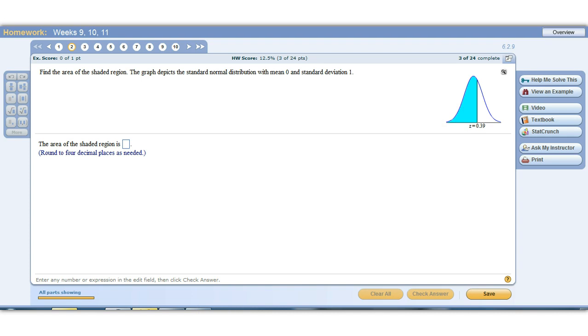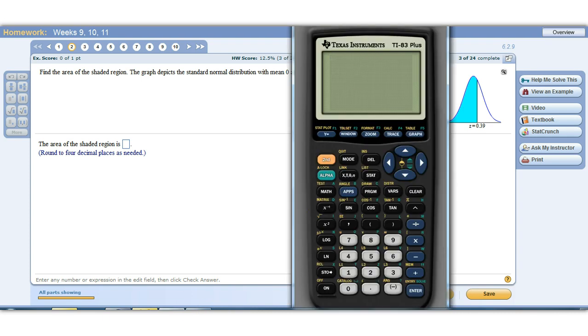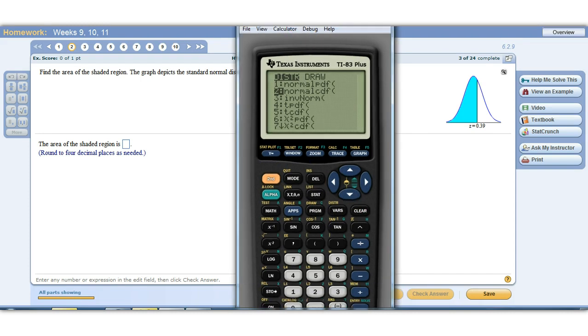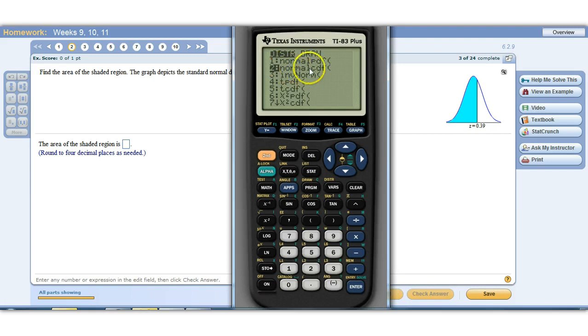All right, now remember, your calculator has a built-in feature for handling this, and it's under the distribution menu, DISTR. So second, DISTR, and we come down to the normal CDF feature. All right, normal CDF - the normal stands for the normal distribution, and that's what we need to use to find these probabilities.